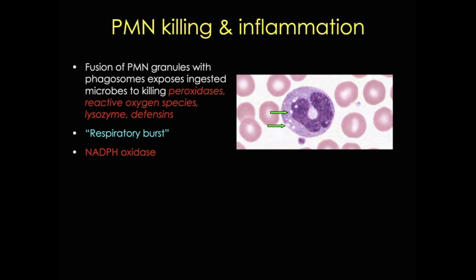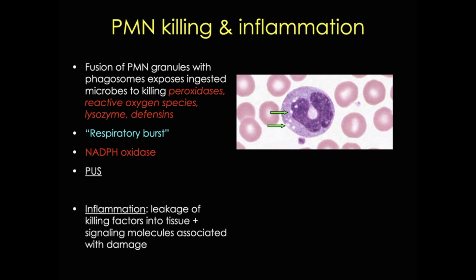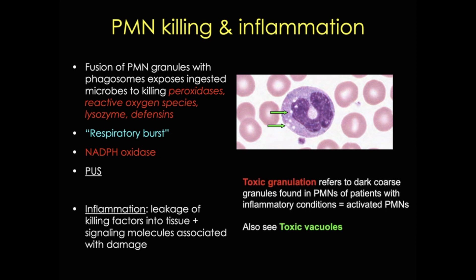When you combine all of the functions of neutrophils, this really leaves behind a mess: apoptotic neutrophils, dead bacteria, semi-digested material, and tissue fluid. This yellow viscous concoction is called pus. The leakage of killing factors and signaling molecules is called inflammation. In inflammatory conditions, neutrophils will accumulate dark, coarse granules — these are called toxic granulations, and if you see them, you'll know you're looking at activated neutrophils.